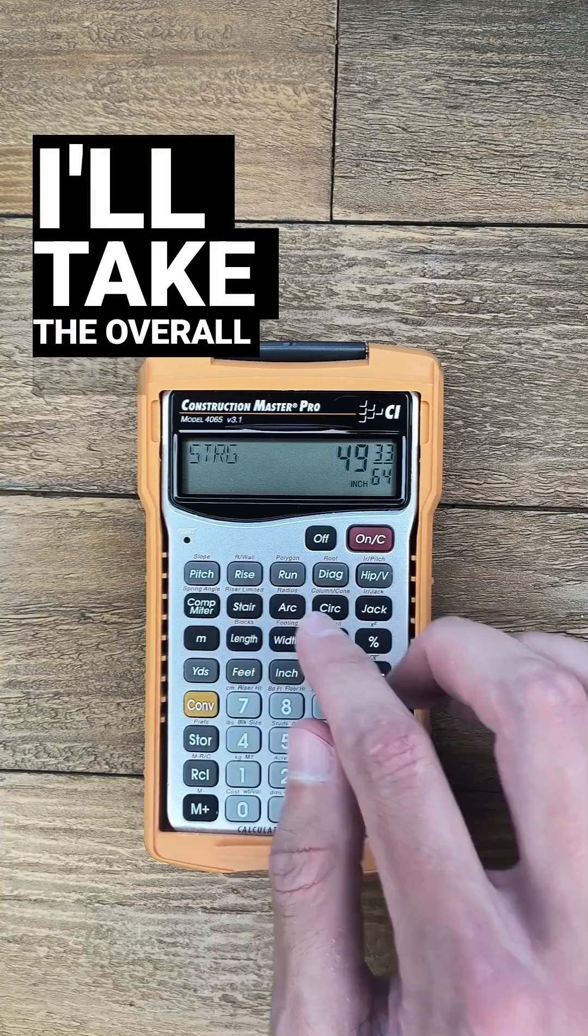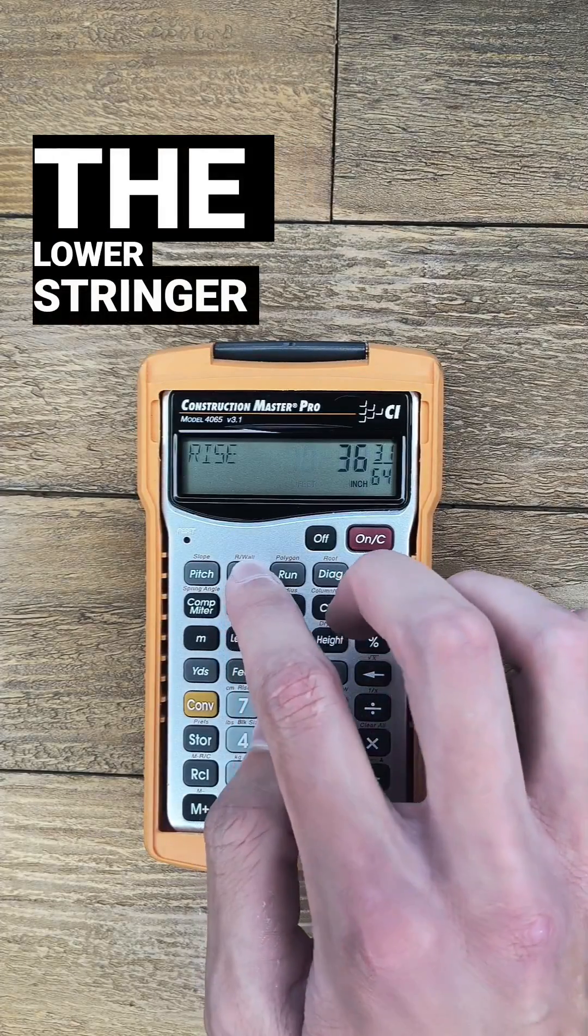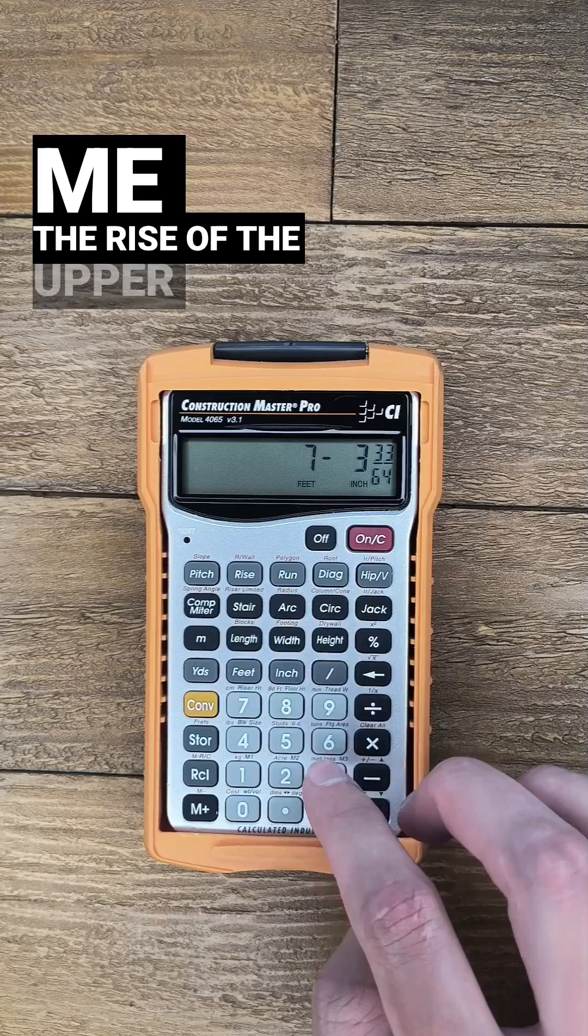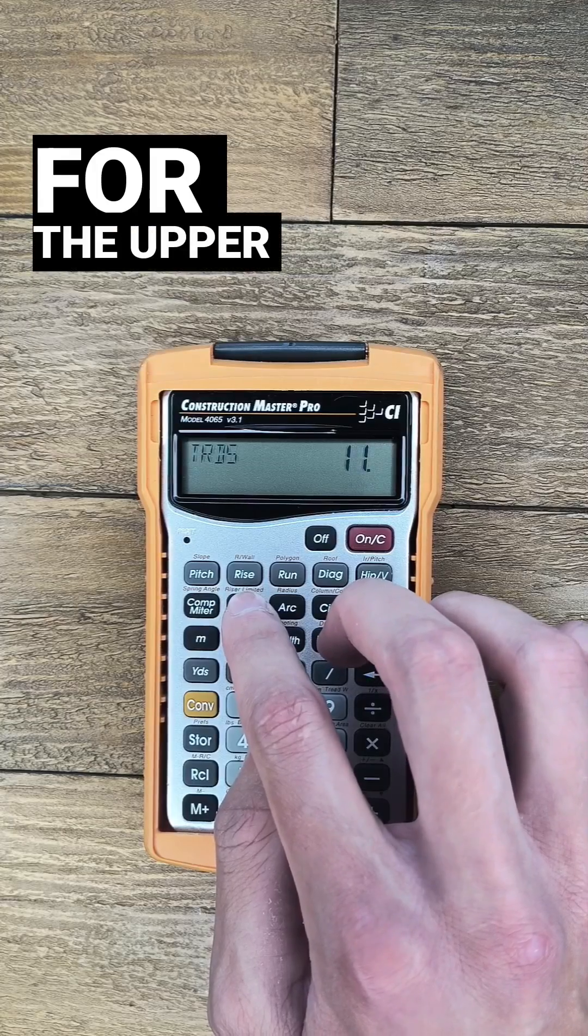And I'll take the overall floor-to-floor height again, 10 feet 4 inches, and subtract the rise of the lower stringer. That will give me the rise of the upper stringer. So I'll push rise and then push stair to toggle through the info for the upper stringer.